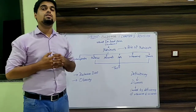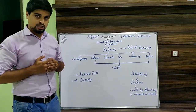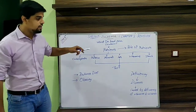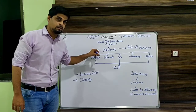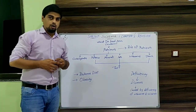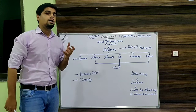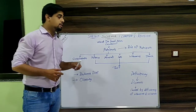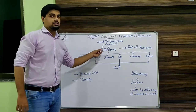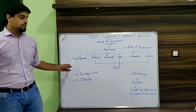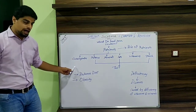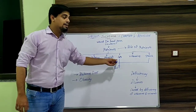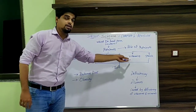Chapter 2 is about the components of food items — that means what food items actually contain. The first concept we studied is nutrients. Out of food, there are some major components required by our body for growth; such components are known as nutrients. These are the different nutrients: carbohydrates, proteins, minerals, fats, and vitamins.